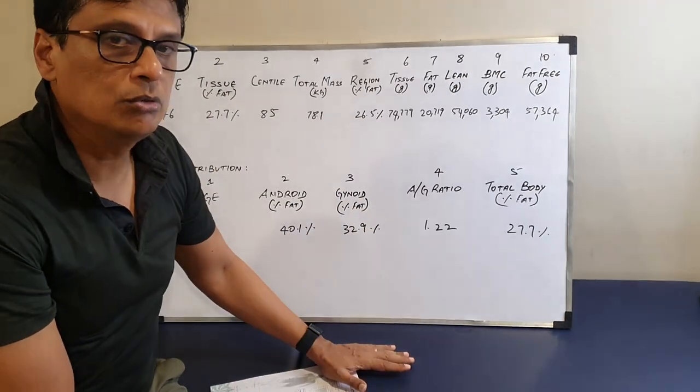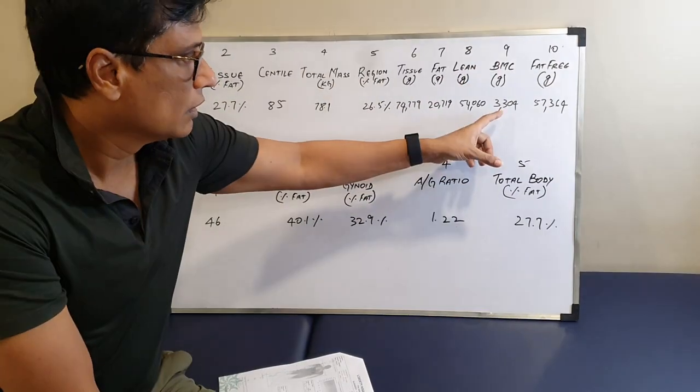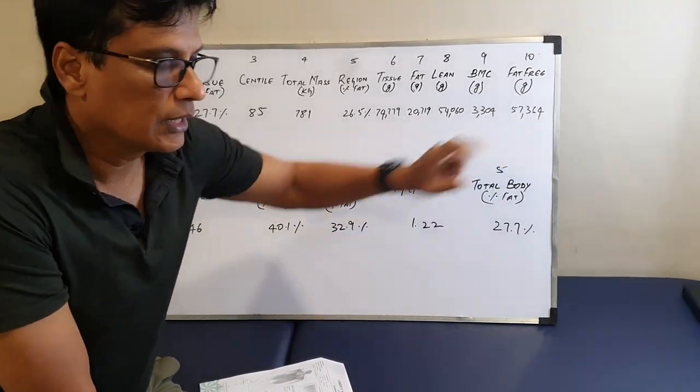BMC is bone mineral content. That means the bone mineral content in the body, which is about 3.3 kgs. Fat-free mass is 57.3 kgs.